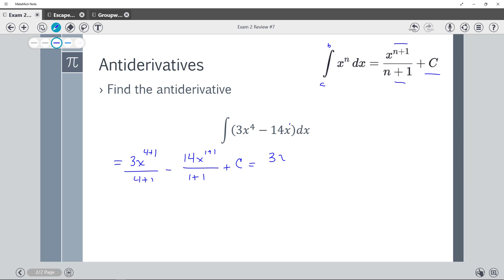So from here, I can try to make it look a little better. And then minus 14x squared over 2 plus c. And then, of course, I can say 2 will go into 14 7 times and get my answer.